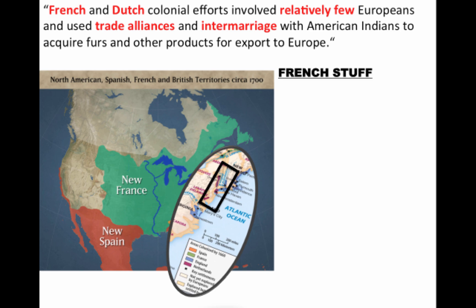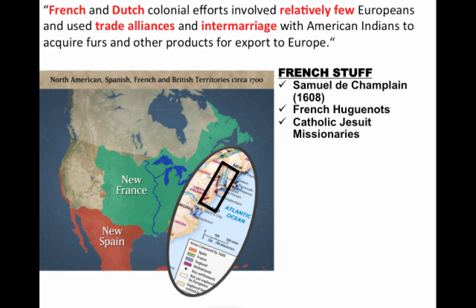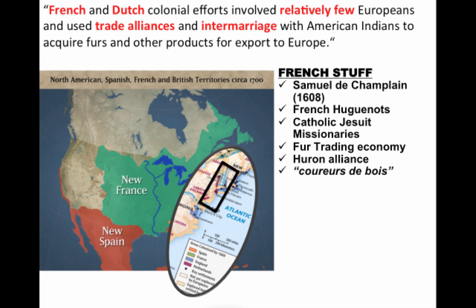A few things about France: Samuel de Champlain, the father of New France, established Quebec in 1608. French Huguenots and Catholic Jesuit missionaries came over, often trying to convert native people. The fur trading economy — especially beaver fur — led to very close relationships with natives, such as the Huron Alliance with the Algonquin people. French fur traders were fiercely independent. In terms of government, France had no democratic principles — no trial by jury, no representative assemblies like you'd see in the English colonies.